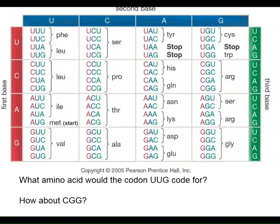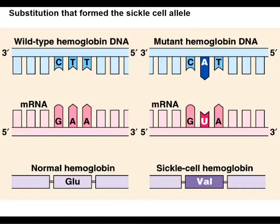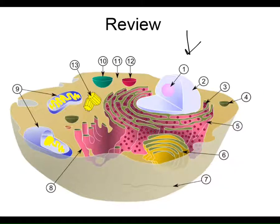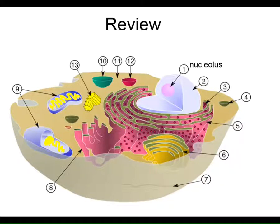Numbers 10 and 12 are additional vesicle structures. Number 11 points to the cytoplasm — the fluid portion of the cell — and the liquid component alone within the cytoplasm is called the cytosol. Make sure you can label and know all those organelles and their purposes. That finishes up Chapter 3 — we've covered cells, organelles, transcription, translation, mutations, the cell cycle, and mitosis.